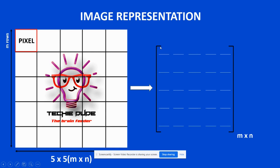Each element of the matrix contains the intensity of the pixel at that particular position. For example, the first row, second column element holds the intensity of the second pixel in the first row. In practical cases, M×N will be in the thousands based on image clarity. This is the basic image representation in all image processing applications.